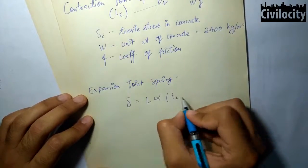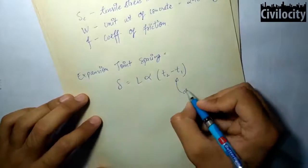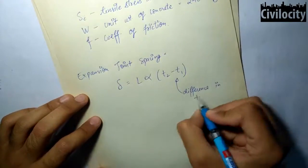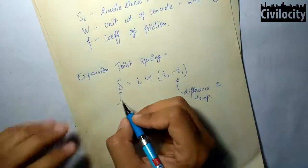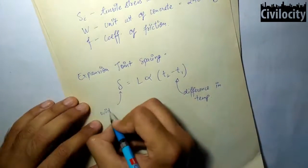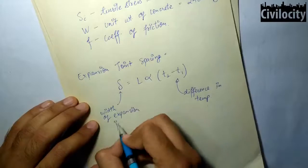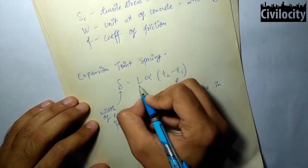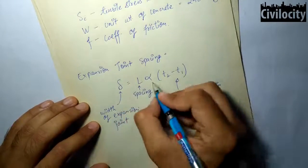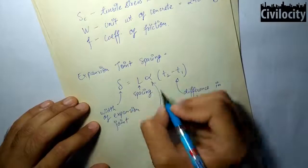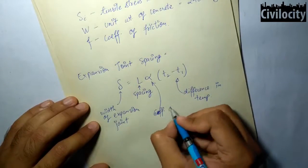The equation of spacing in expansion joint is given as δ = L·α·(T2 − T1), where δ is the width of the expansion joint in the cement concrete slab, T2 − T1 is the difference in temperature between the two surfaces — that is the top and the bottom — and α is the coefficient of thermal expansion.